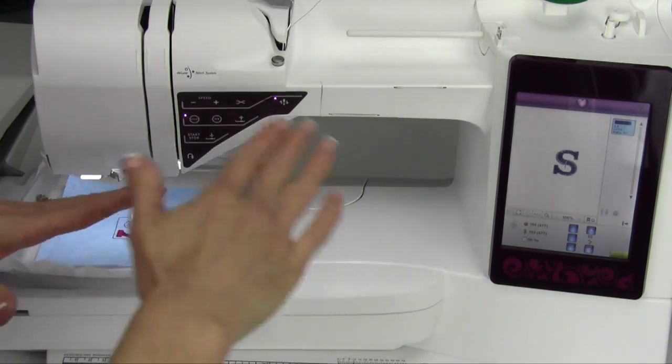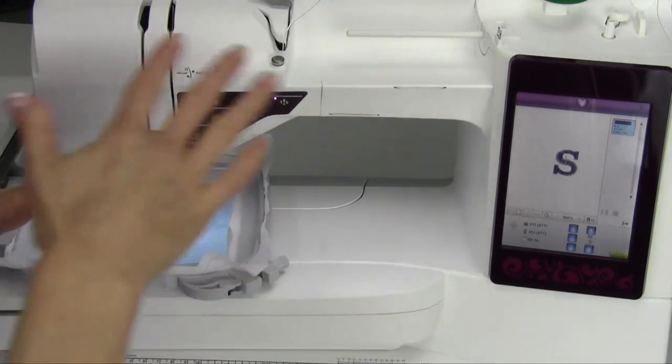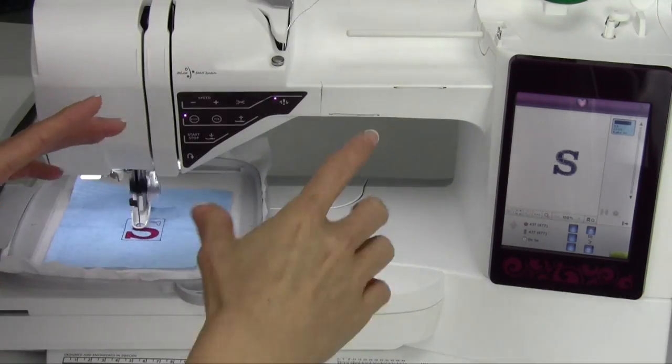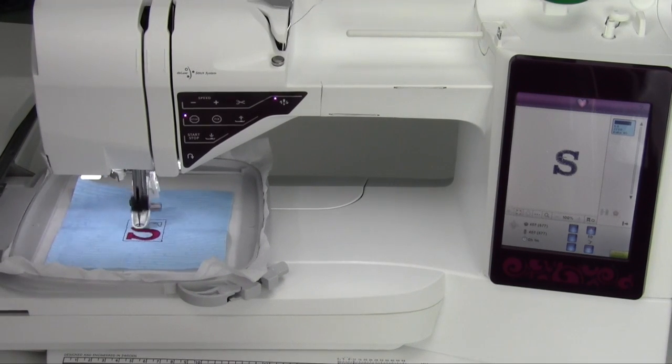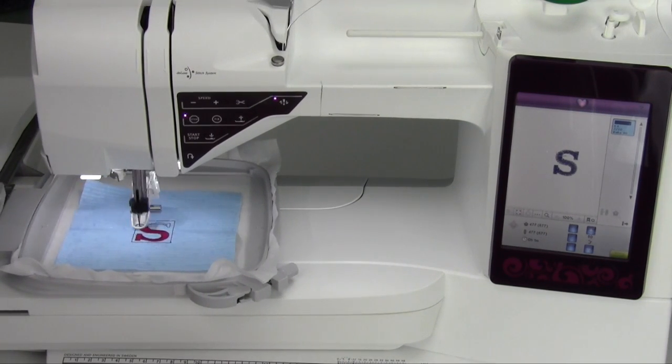Another thing is if you're ever putting the water-soluble stabilizer over the top of like a towel where the nap is going to be, that's another feature. That basting stitch helps hold that piece that's floating on top, not actually move around once it starts to do the rest of the stitching.